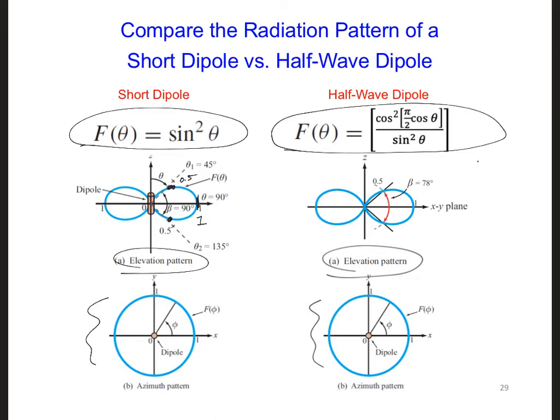So for the short dipole on the left, if we solve for the value of theta where F is equal to 0.5, we get 45 degrees and we get 135 degrees.